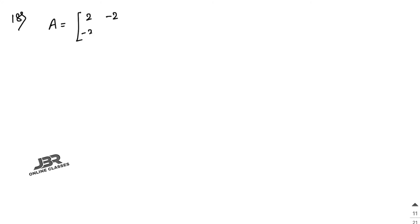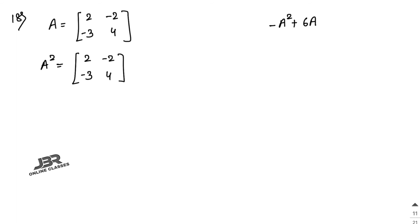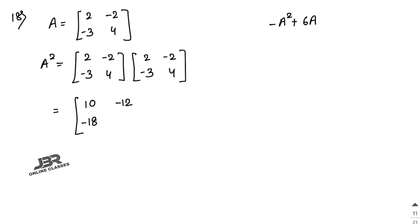Sum number 18: A = [2, -2; -3, 4]. Evaluate −A² + 6A. First compute A²: 2×2 + (−2)×(−3) = 4+6 = 10, 2×(−2) + (−2)×4 = −4−8 = −12, (−3)×2 + 4×(−3) = −6−12 = −18, (−3)×(−2) + 4×4 = 6+16 = 22. So A² = [10, -12; -18, 22].